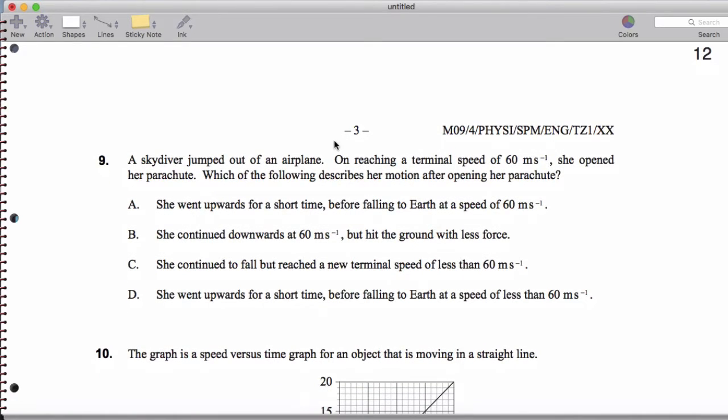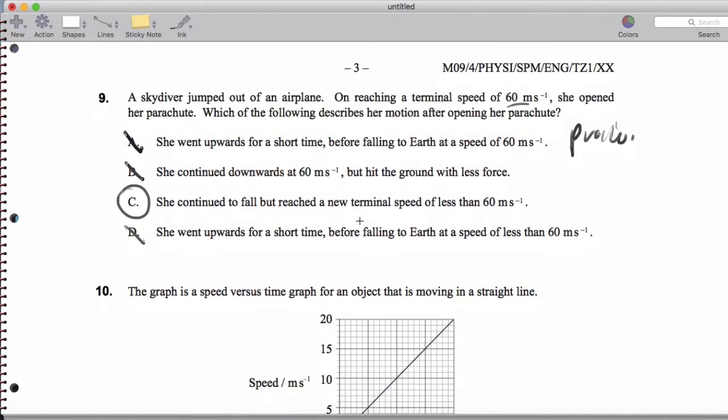And then for number nine, a skydiver jumps out of an airplane and reaches terminal speed. This is something we're going to do next unit. So this is practice. But after she opens her parachute, she should continue to fall and reach a new terminal speed of less than 60. So she's not going to hit the ground at 60 meters per second nor is she going to go upward. This is what's going to end up happening is that she'll actually end up decelerating again.